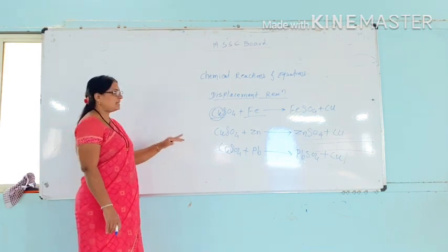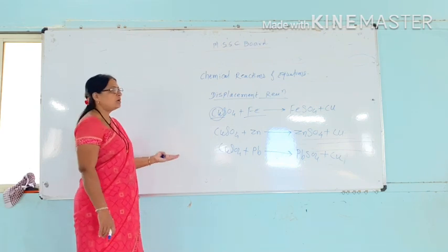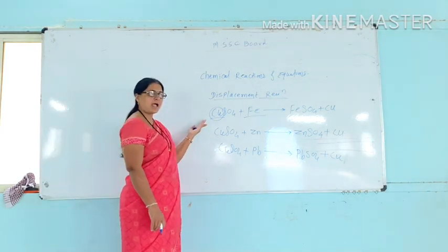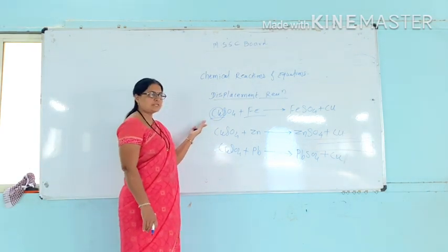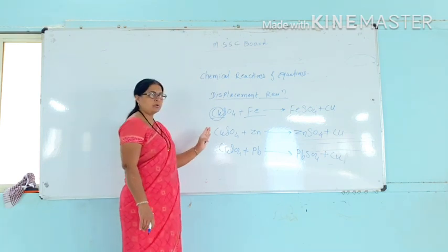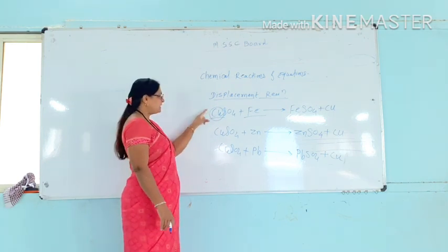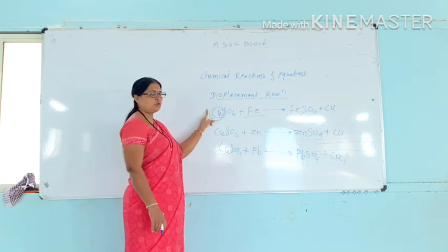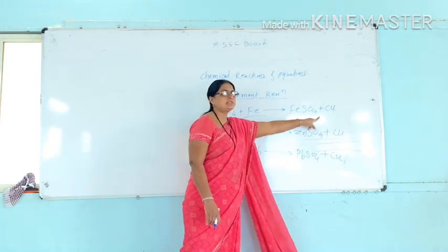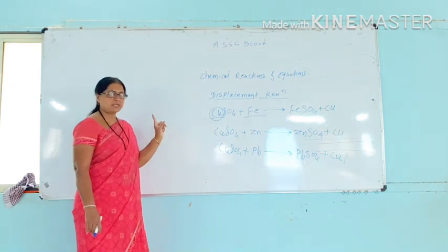The more reactive element displaces the less reactive element. The more reactive iron displaces the less reactive iron from the compound. The less reactive material becomes separate. This is known as a displacement reaction.